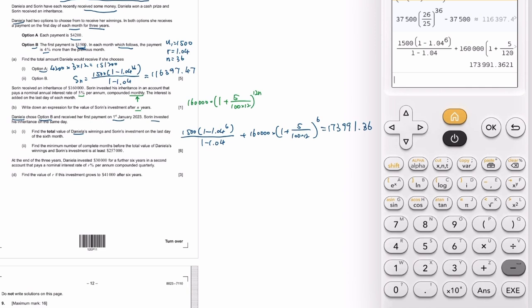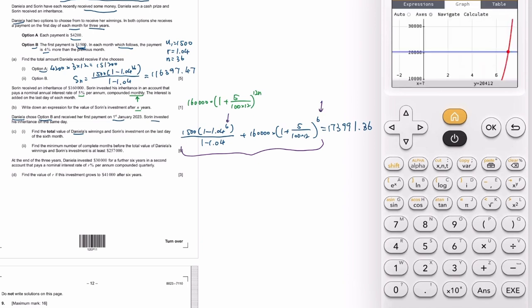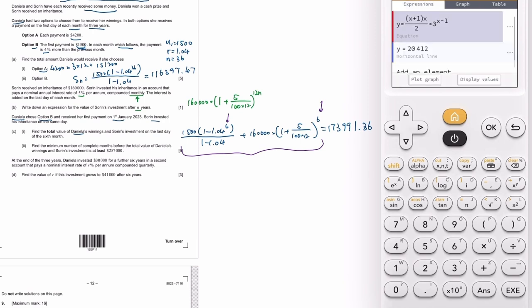What's the minimum number of complete months so that the total value is at least that? It's really just this, but you change the six into x and then you graph it. Such a meaningless paper. X is 28.44, so the minimum complete month is 29.